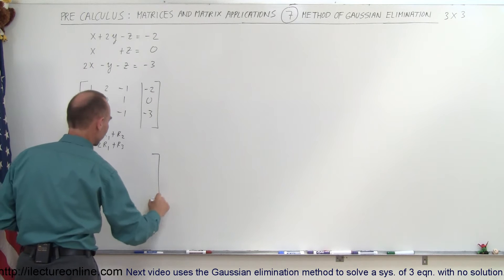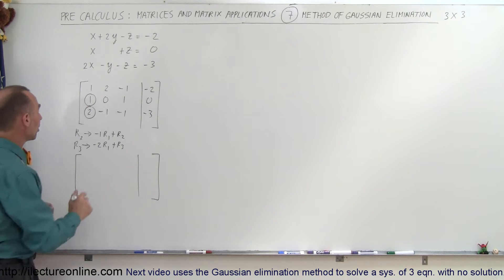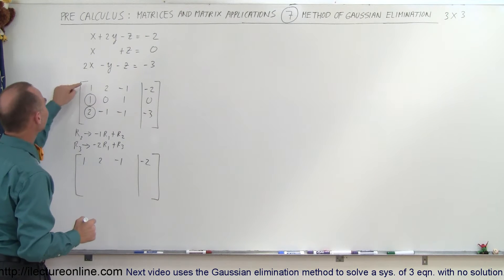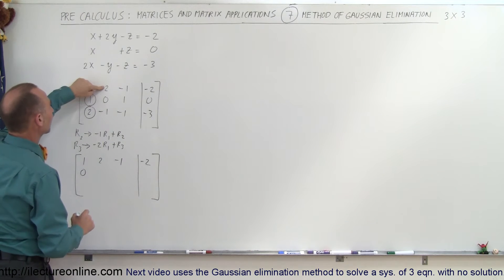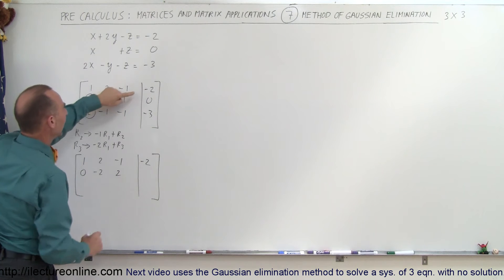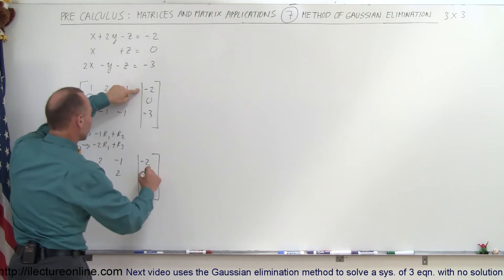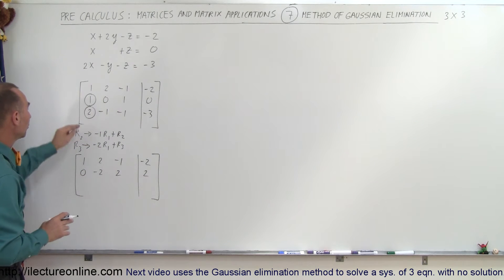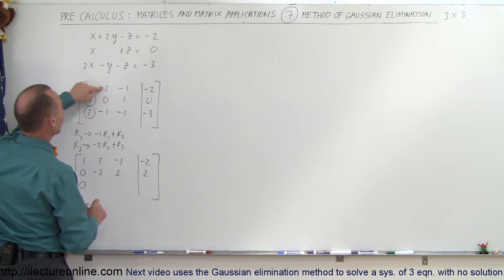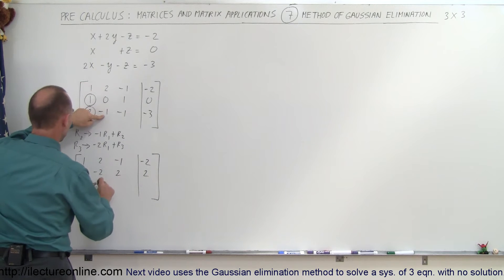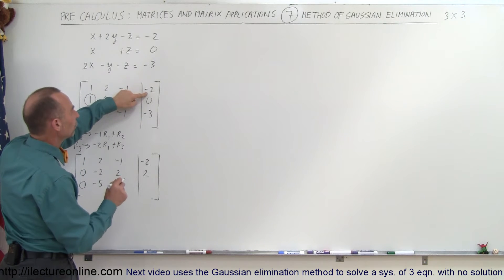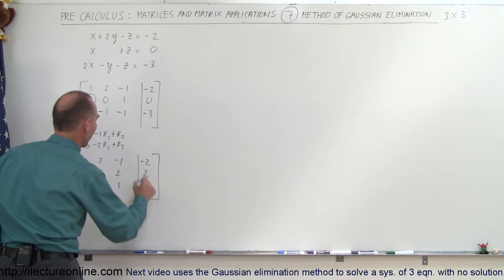When we do that we get the following matrix. The first row does not change: 1, 2, negative 1, negative 2. For the second row: negative 1 times 1 added to 1 gives 0; negative 1 times 2 added to 0 is negative 2; negative 1 times negative 1 is positive 1 added to 1 gives 2; and negative 1 times negative 2 is positive 2 added to 0 gives 2. For the third row: negative 2 times 1 added to this gives 0; negative 2 times 4 is negative 4 added to negative 1 is negative 5; negative 2 times negative 1 is positive 2 added to negative 1 is positive 1; and negative 2 times negative 2 is positive 4 added to negative 3 is positive 1.